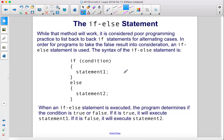While that method will work, it's considered poor programming practice to list back-to-back if statements for alternating cases. In order for programs to take the false result into consideration, an if-else statement is used.